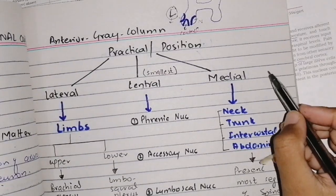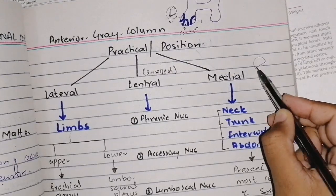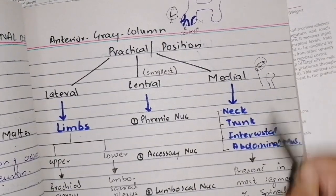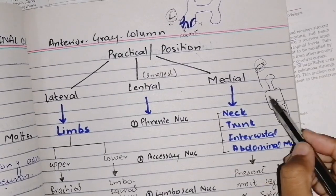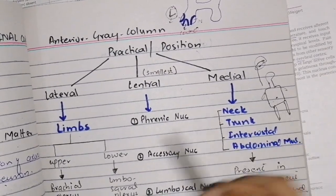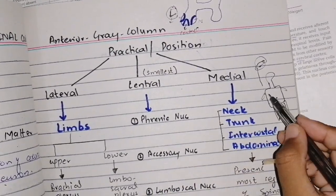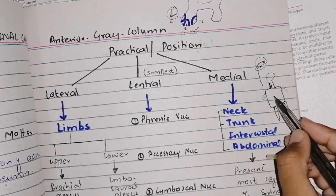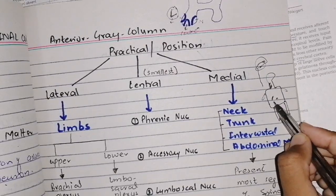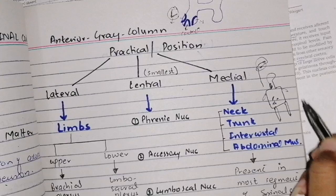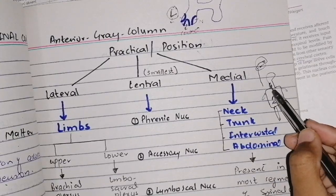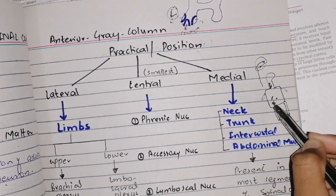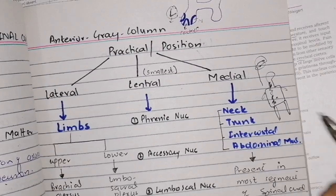Now for the medial group: medially we have the neck and trunk — including intercostal muscles and abdominal musculature. Remember the acronym NTIA: neck, trunk, intercostal muscles, and abdominal musculature. These are supplied by the medial group. Since the spinal cord spans the entire cervical and thoracic regions, this group is present throughout.